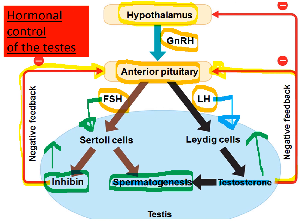Testosterone also has a negative feedback mechanism with the hypothalamus. As the level of testosterone in the body increases, the hypothalamus will secrete less gonadotropin-releasing hormone. This is all about a balance of hormonal levels, and that balance is often called a negative feedback mechanism, which is brought about through homeostasis.